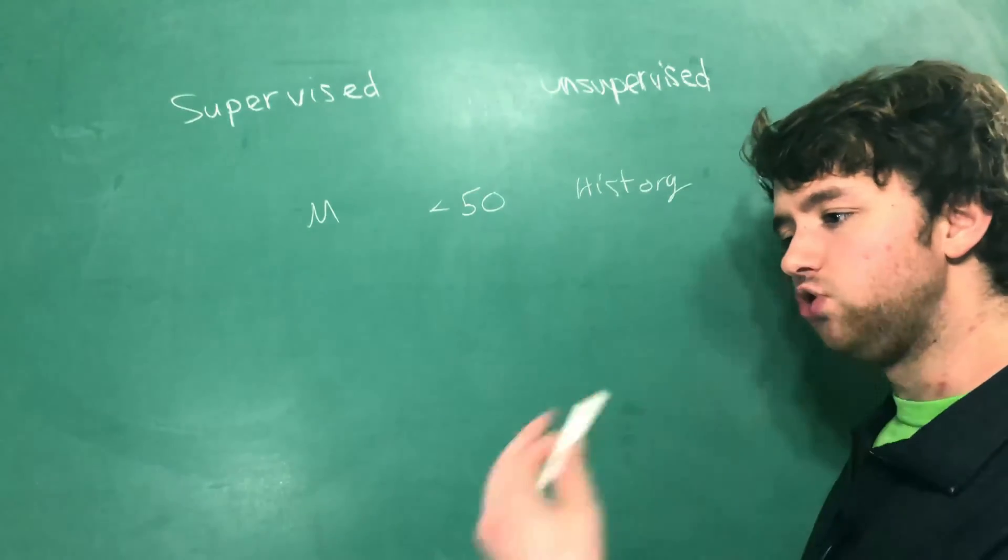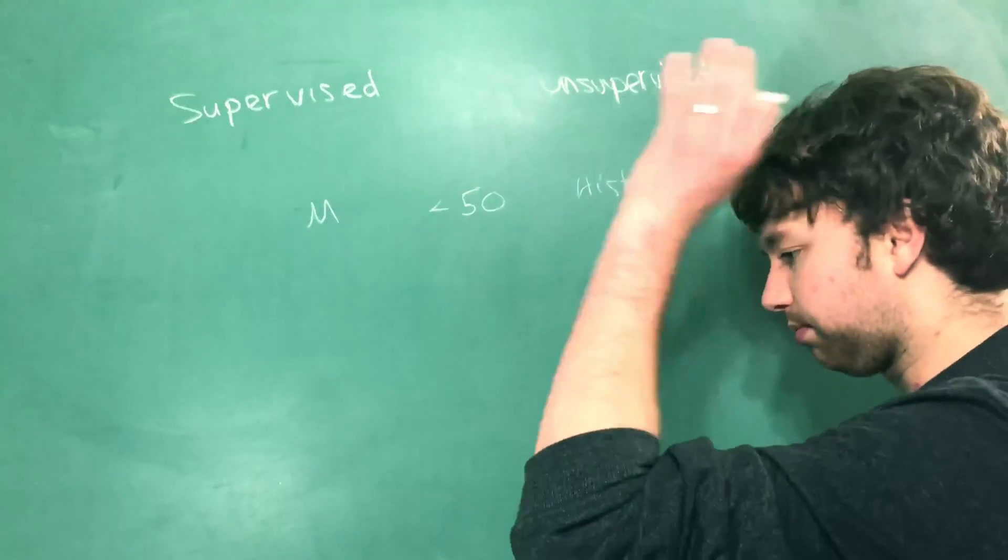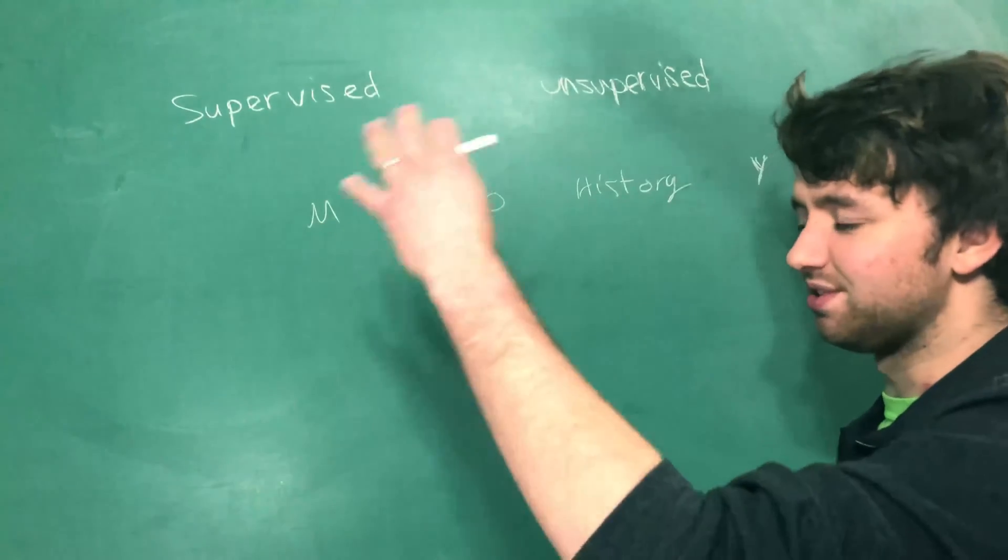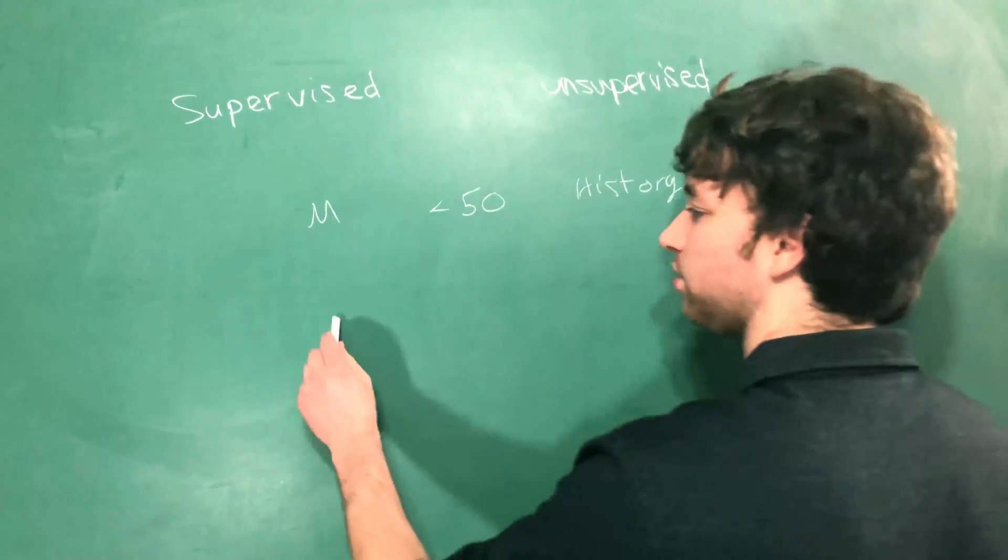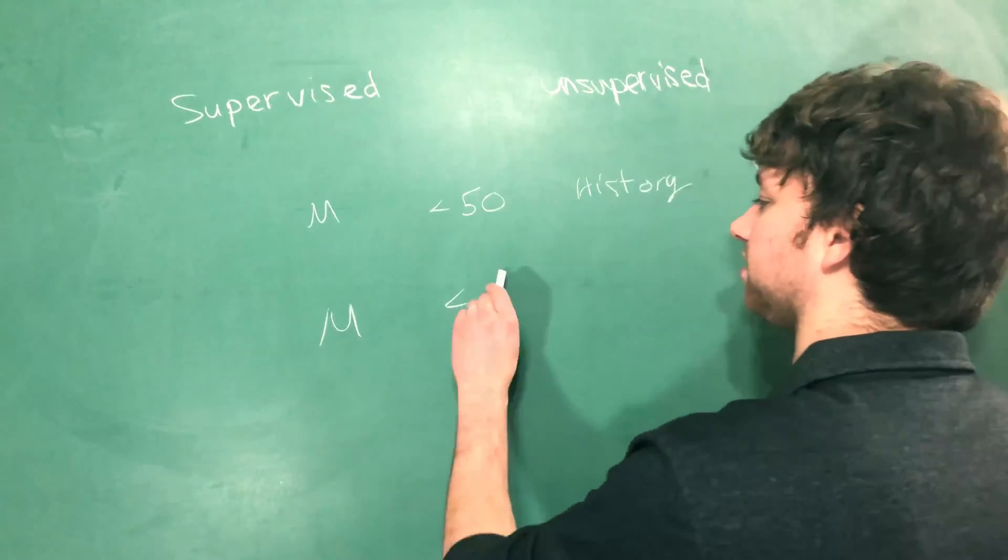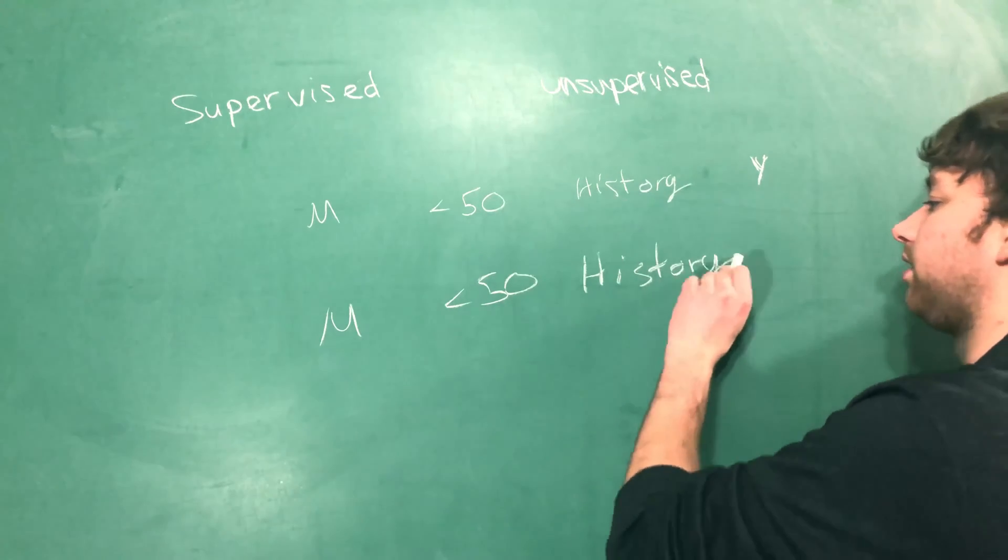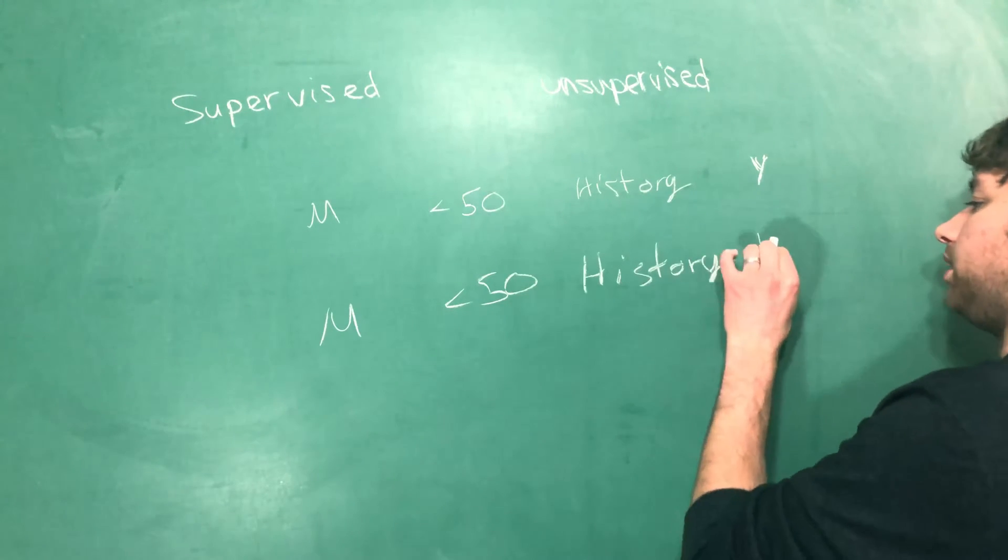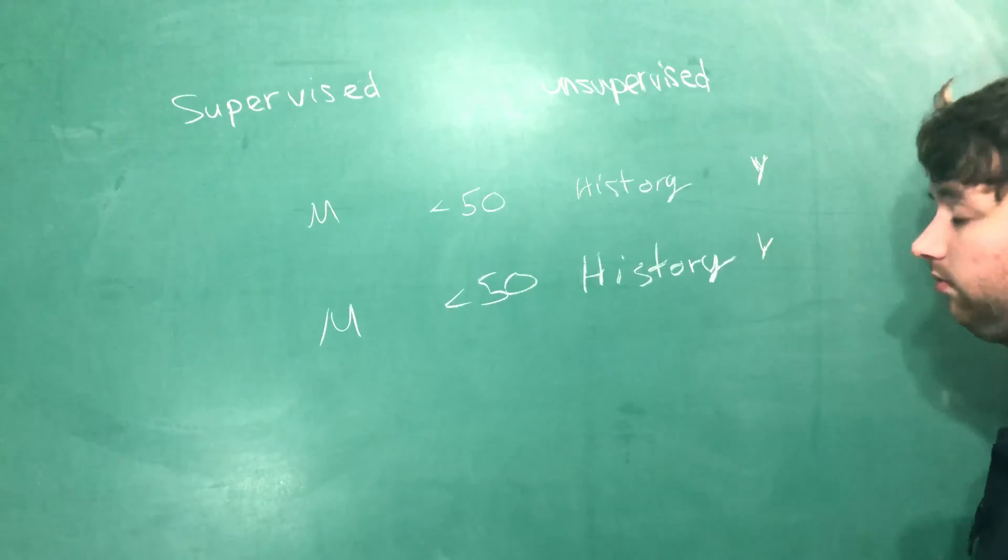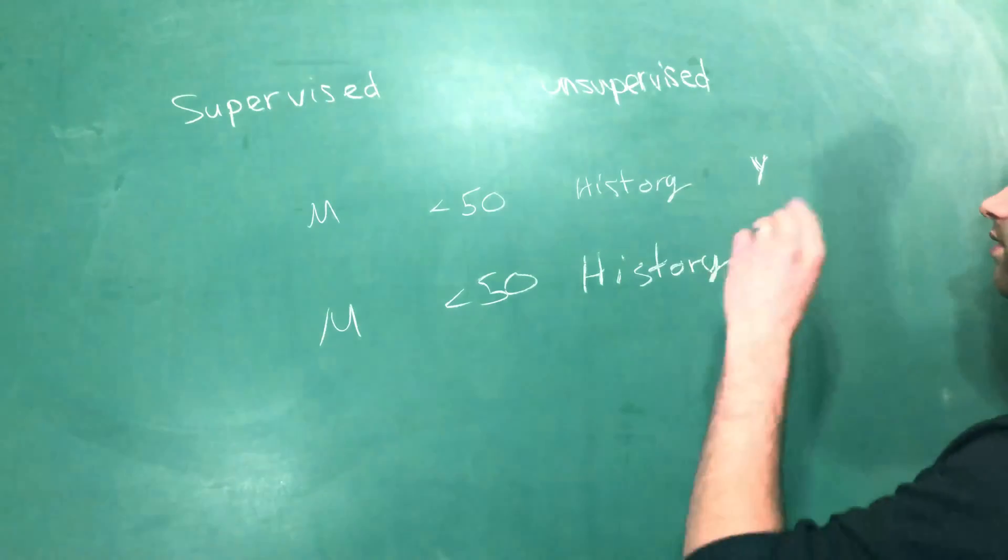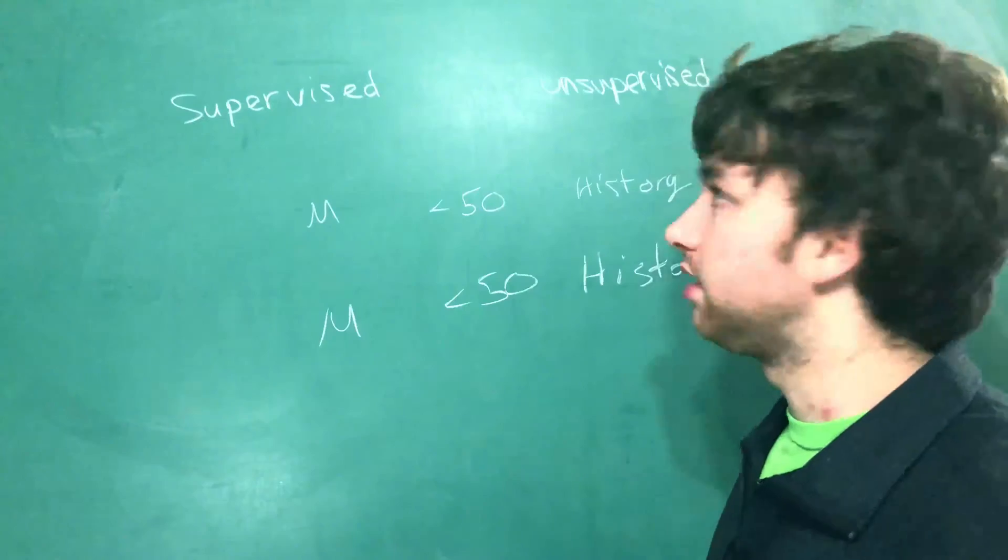What this means is that when we get new data, someone comes into our office who's a male and less than 50 with a history of diabetes in their family, the obvious result is going to be yes, this person is going to have diabetes before they die. And that is based off of the historical data that our algorithm has learned from. So that puts supervised learning into perspective.